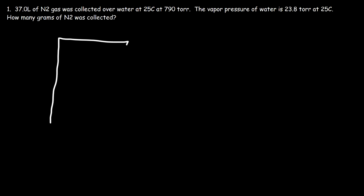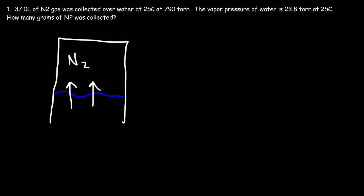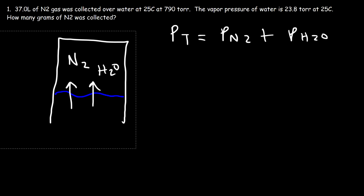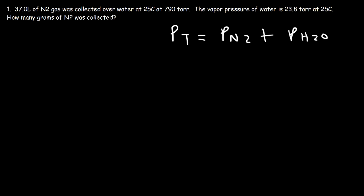Whenever you have a gas being collected over water — say you have some water and nitrogen gas above that liquid — there's going to be a small amount of water vapor. So the total pressure is not due to nitrogen alone. The total pressure is the sum of all partial pressures. We have two substances in the vapor phase: N2 and water.